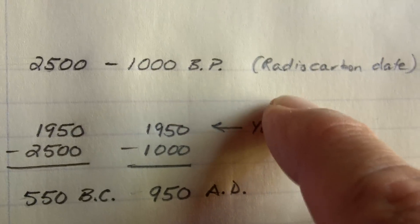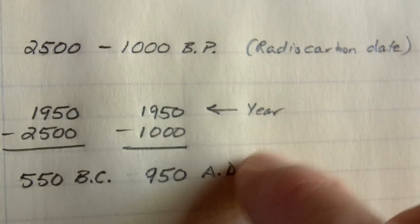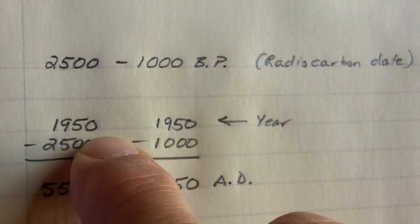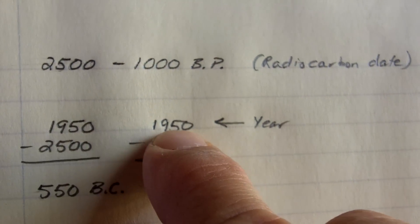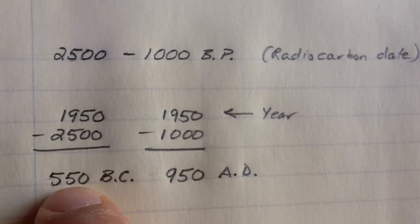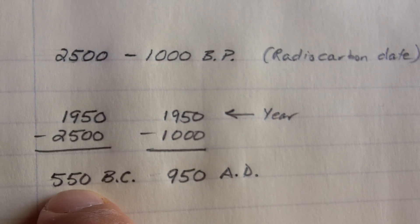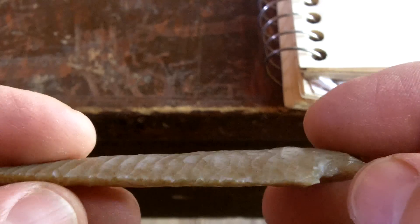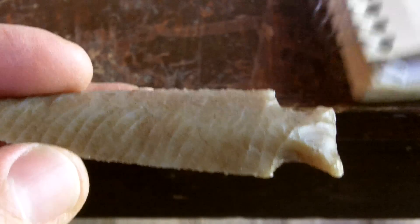The radiocarbon dates had to be converted to calendar dates. So 2500 to 1000 BP — you start with the year 1950, subtract those numbers, and you get a range of 550 BC to 950 AD. So that's the date range for this particular arrowhead.